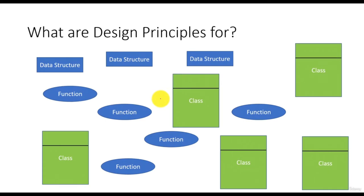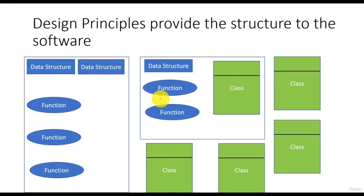We get some requirements, we develop something, then we get a few new requirements and we change existing pieces. We add a few new pieces, and the software just continues to grow. Slowly, the software becomes so complex, so hard to understand and maintain, that we change only one piece of it and the ripple effect goes to the other extreme. Design principles are there to help us so that we do not fail in such situations.